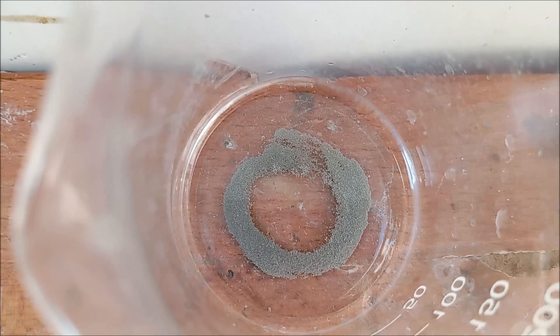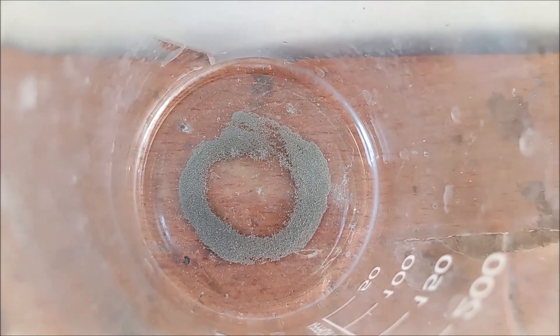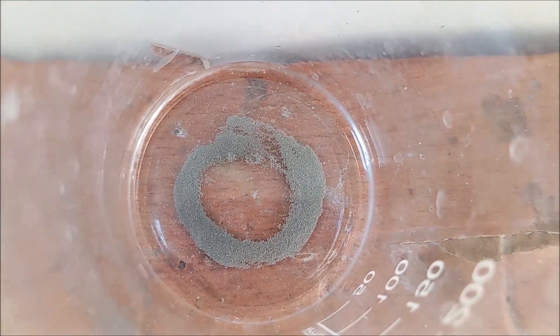Sulfuric acid attacks nickel metal very slowly. Tiny bubbles can be seen on the surface of the metal but not much is happening.